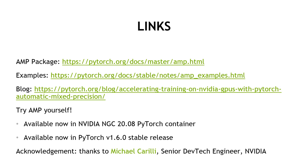We've focused on PyTorch in this talk, but there are similar approaches in other frameworks such as MXNet and TensorFlow. If you're using GPUs for training, I'd strongly recommend taking advantage of this — you'll see significant speedups and also give yourself flexibility to try larger models. Apex AMP still exists for backwards compatibility, but going forward we'd recommend using the fully integrated AMP module in PyTorch. There are links to the AMP package, further usage examples, and a blog post with more performance figures including the new A100 GPU. AMP is available in our latest NGC container for PyTorch and in the 1.6.0 release. Finally, I'd like to acknowledge my colleague Michael Carilli, who developed AMP in PyTorch and provided much of the material for these slides.